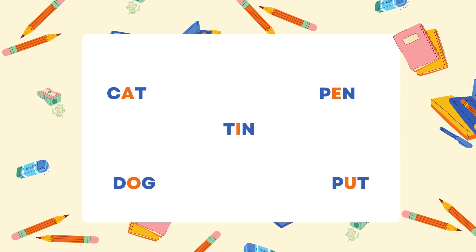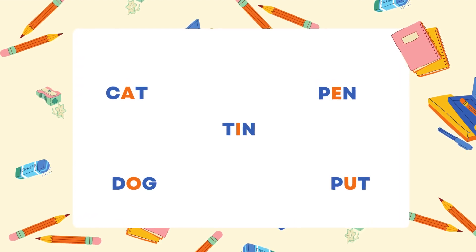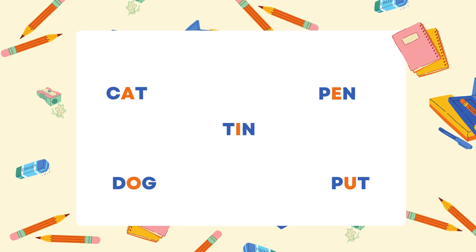Let's look at some words. Cat: C is a consonant, A is a vowel, and T is a consonant. Pen: P is a consonant, E is a vowel, and N is a consonant. Tin: T is a consonant, I is a vowel, and N is a consonant. Dog: D is a consonant, O is a vowel, and G is a consonant. Put: P is a consonant, U is a vowel, and T is a consonant.